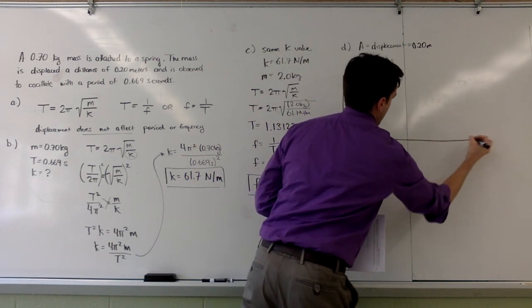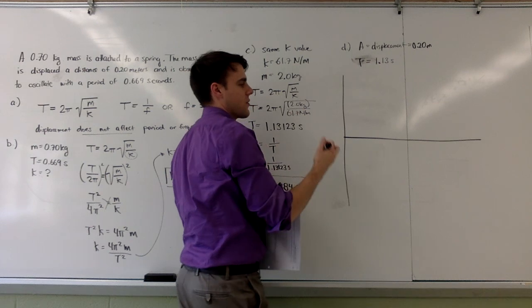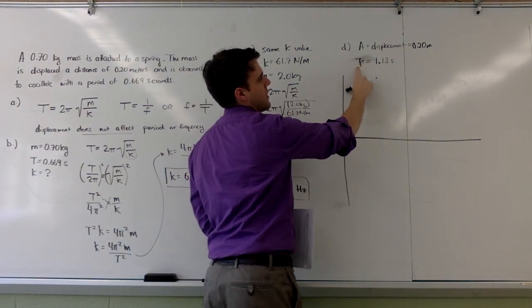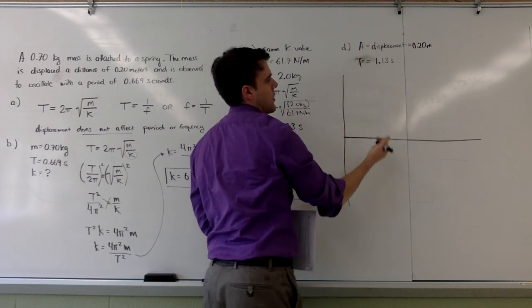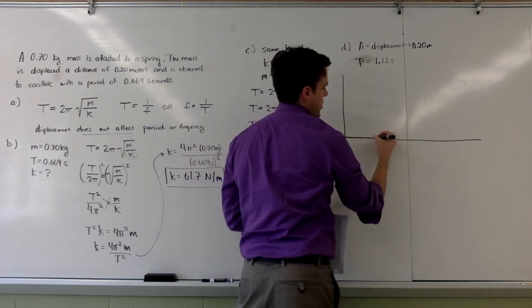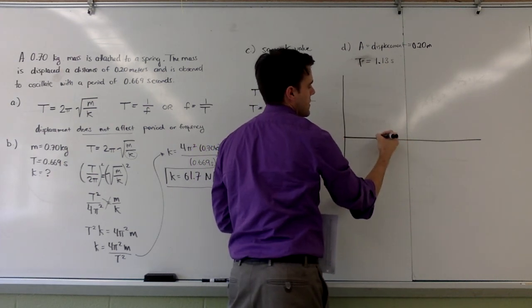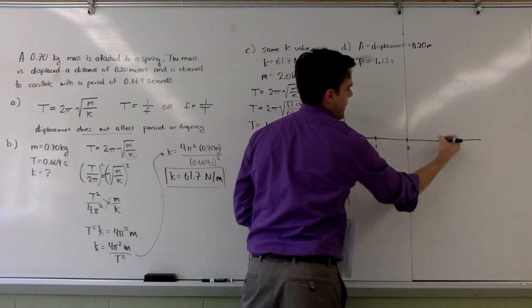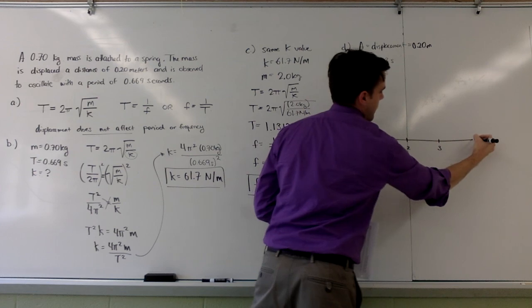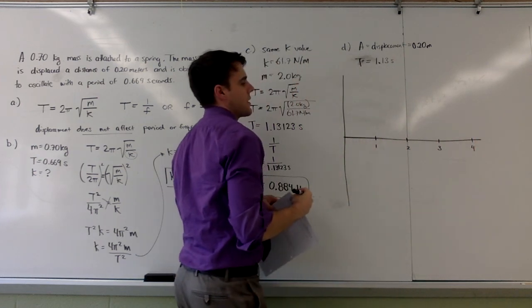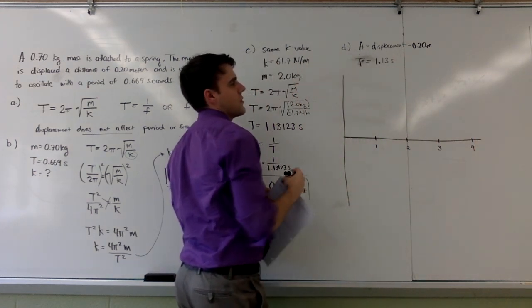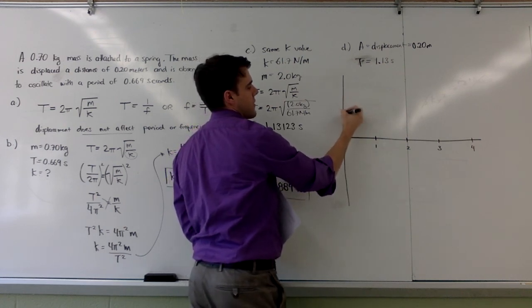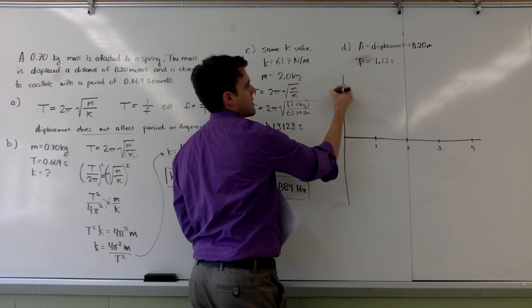That means that I need three waves where each wave has a period of 1.13 seconds. So, I'm going to go ahead and mark about 4 seconds on my graph.